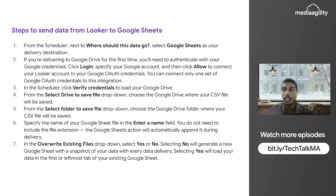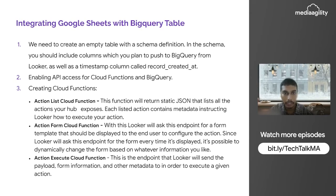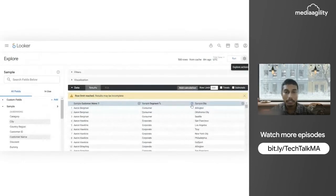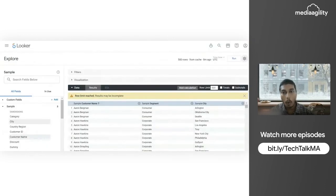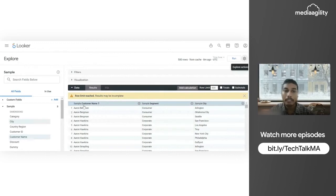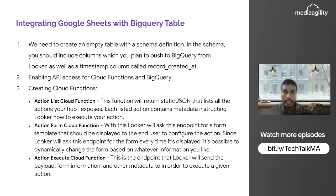Now we'll cover integration of Looker with BigQuery. Before moving forward, we need to create a table with a schema definition. Suppose in Explore I have three columns — I need to provide all three column names when creating the table. I need to ensure I don't include the view name, only the column names. The last column to add is 'record_created'. That completes the first step of creating an empty table.